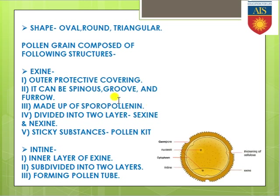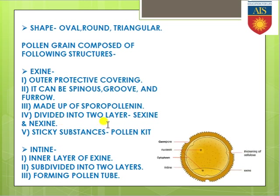Due to the presence of sporopollenin, the pollen grain is very well protected, because sporopollenin protects the internal structures of the pollen grain even in extreme environmental conditions. The exine layer, which is the outermost layer, is divided into two layers — one is sexine, which is the outer one, and the other is nexine, which is the inner one.